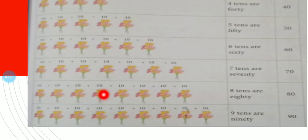One, two, three, four, five, six, seven, eight: eight tens are eighty. One, two, three, four, five, six, seven, eight, nine: nine tens are ninety. See here we have bunches of ten flowers.